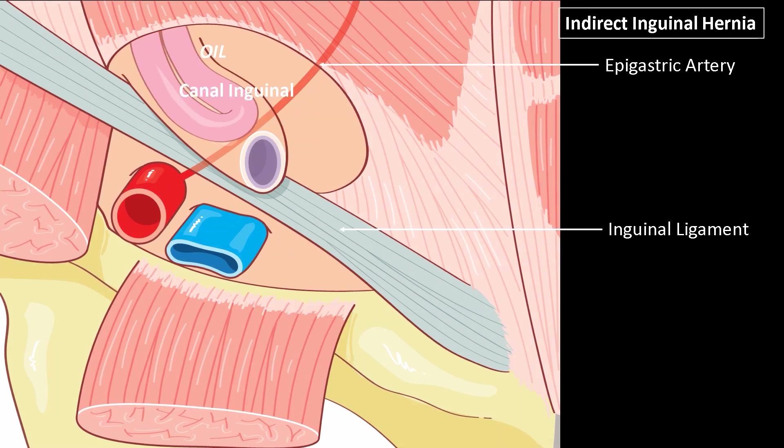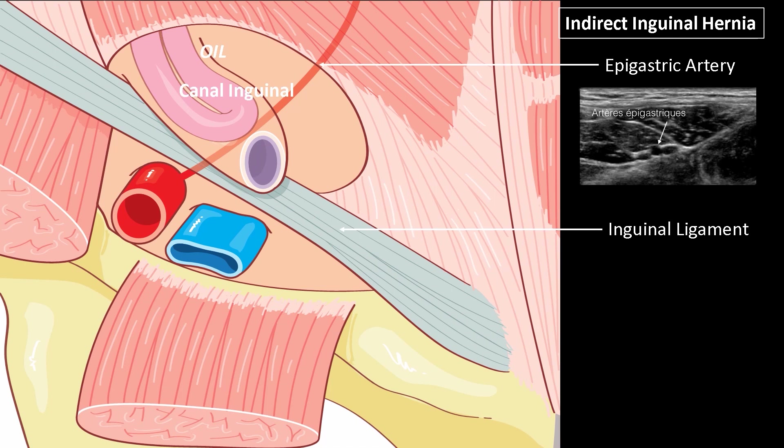For inguinal hernias located above the inguinal ligament, direct inguinal hernias should be distinguished from indirect inguinal hernias. To do this, the essential reference is the inferior epigastric artery, which is very easy to locate on ultrasound on the deep surface of the rectus muscle of the abdomen, and which will delineate the two inguinal orifices.